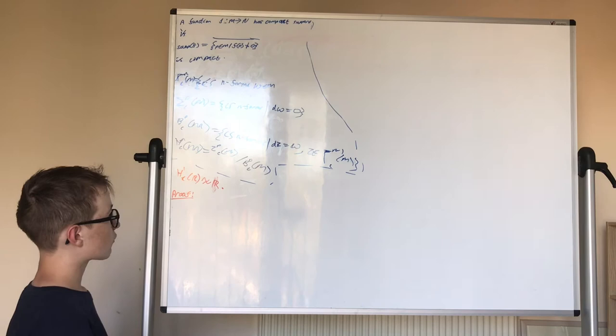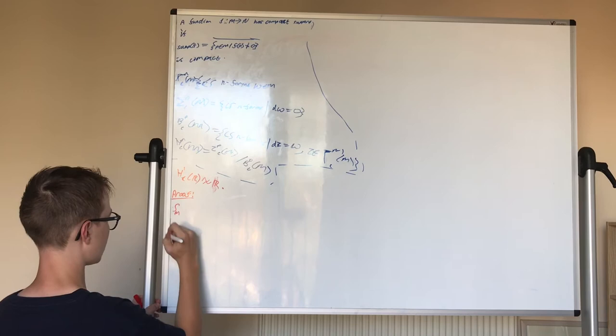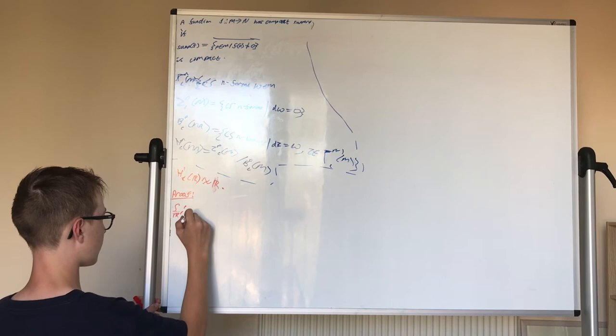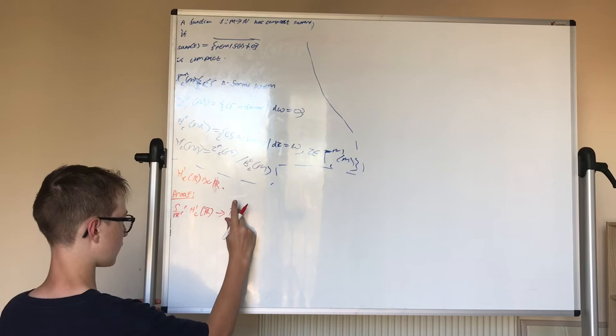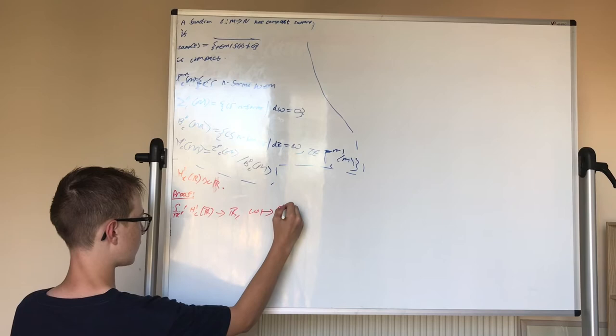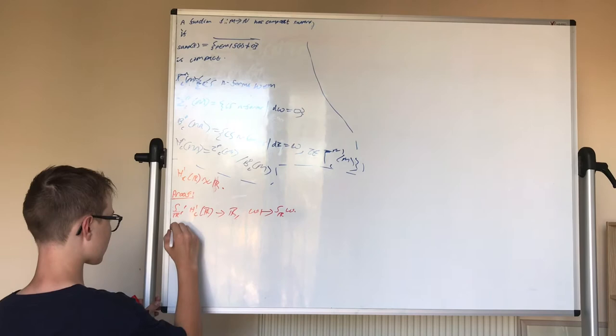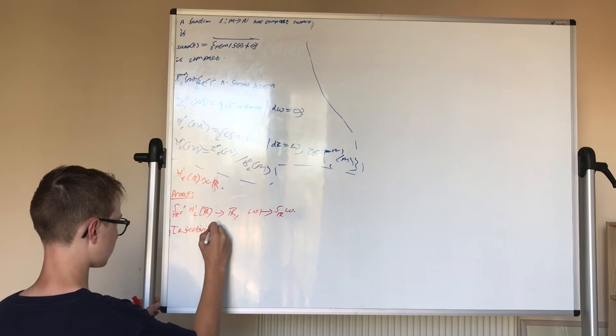Now, if we have an integration map, that's clearly going to be surjective. So if we have the integration map over R, which takes you from the first de Rham cohomology group of R with compact supports to R, such that it takes omega to the integral over R of omega. And this is injectivity. We need to show injectivity.